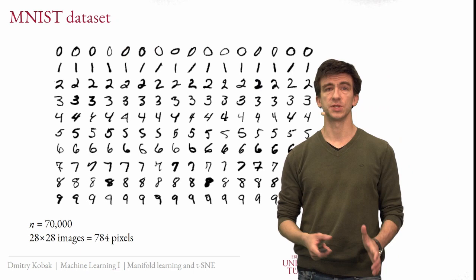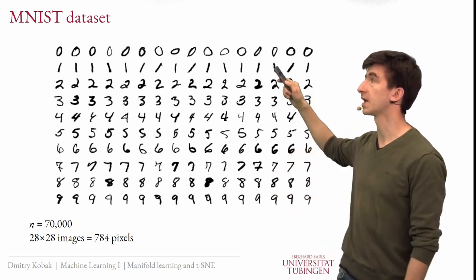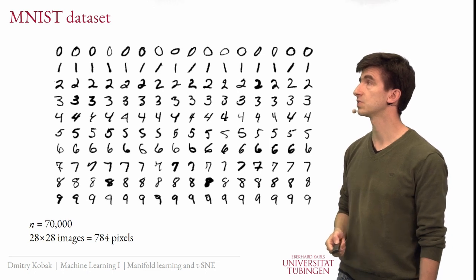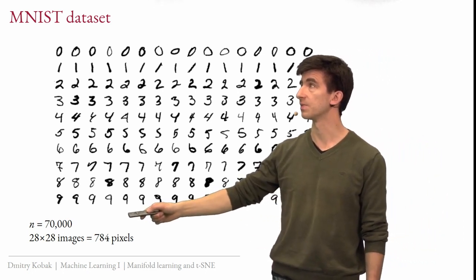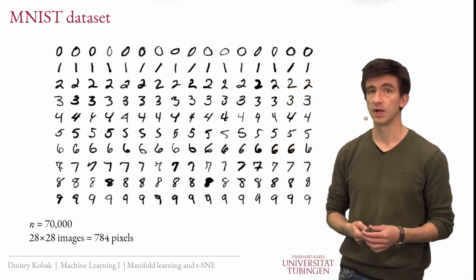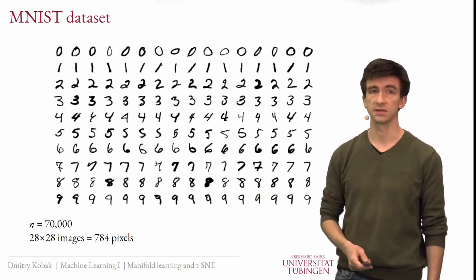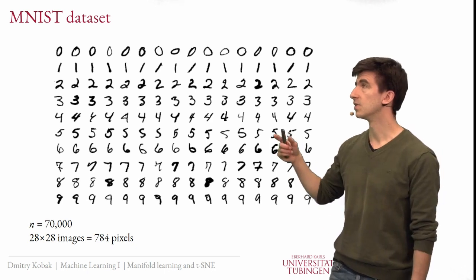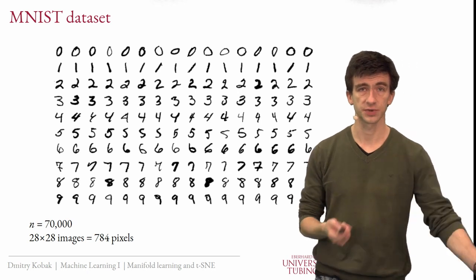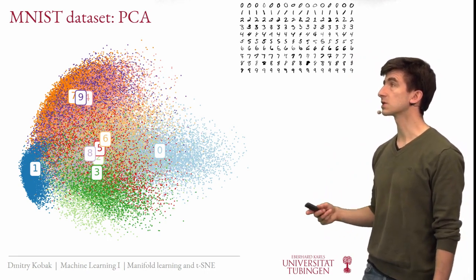Most of the time today I am going to be talking about MNIST data, which is a classic machine learning dataset consisting of handwritten images of digits. There are ten different digits possible, 70,000 images in total. Each image is 28 by 28 pixels, so 784 pixels — the pixels are our features, and 70,000 is the sample size. We want to visualize this in two dimensions. The method we already discussed is PCA, so I can show you how the PCA of this data looks.